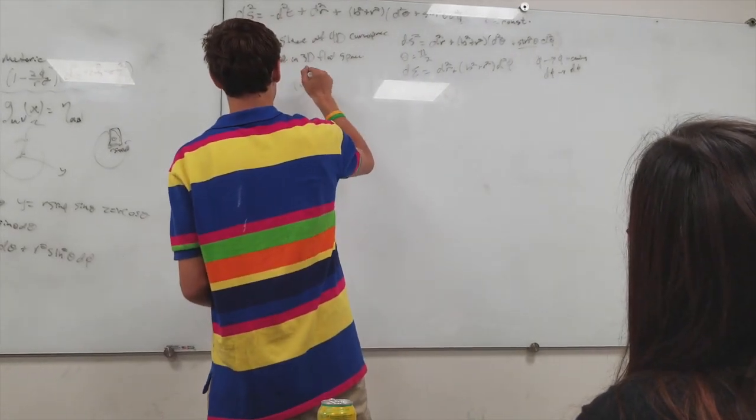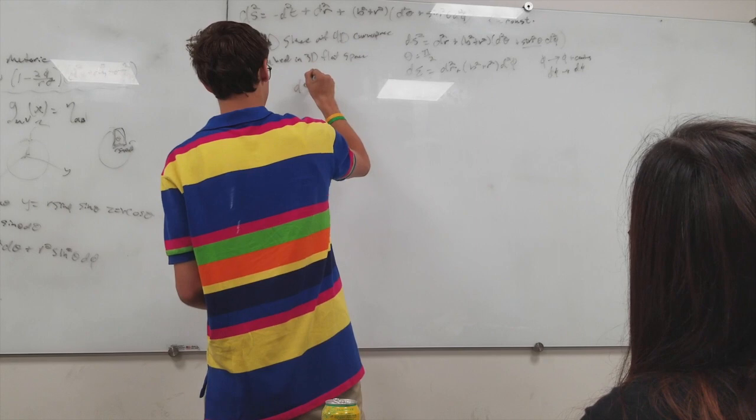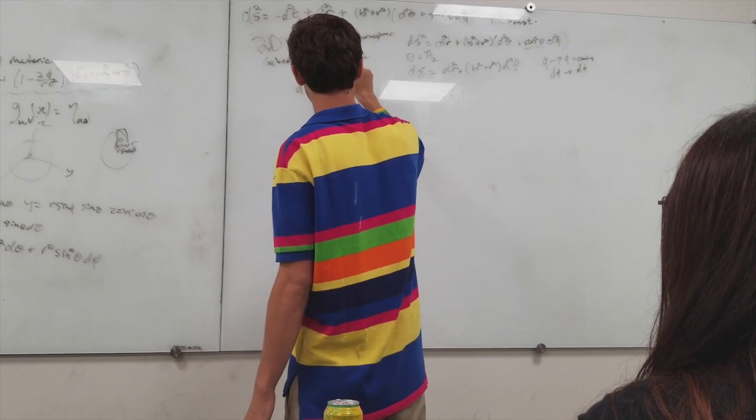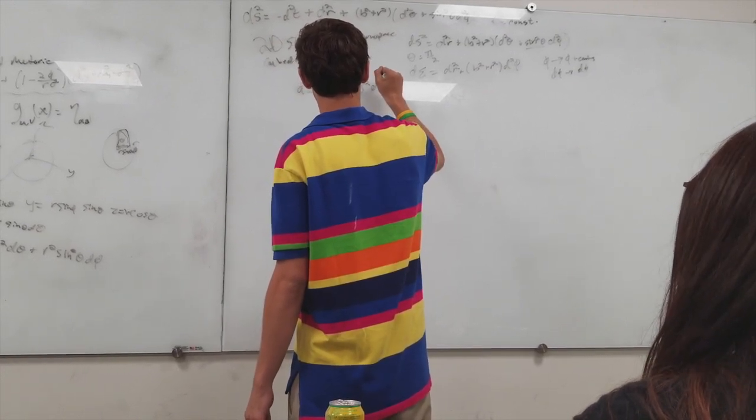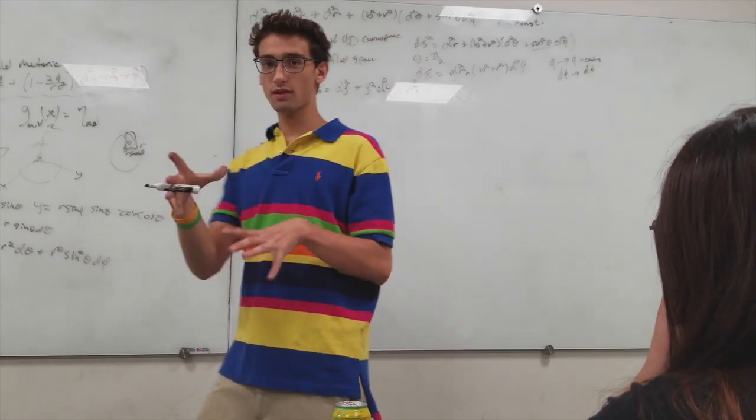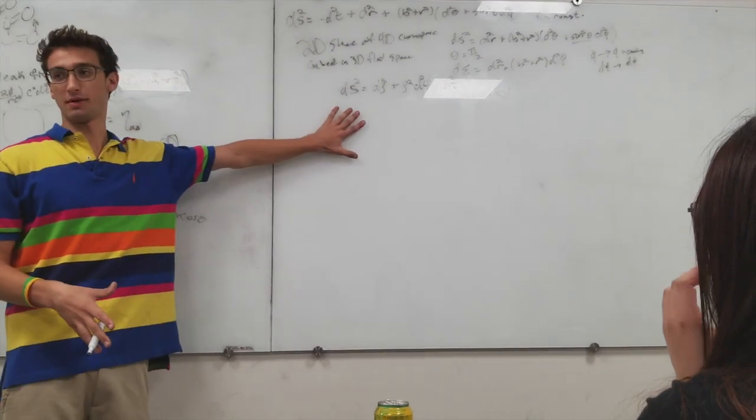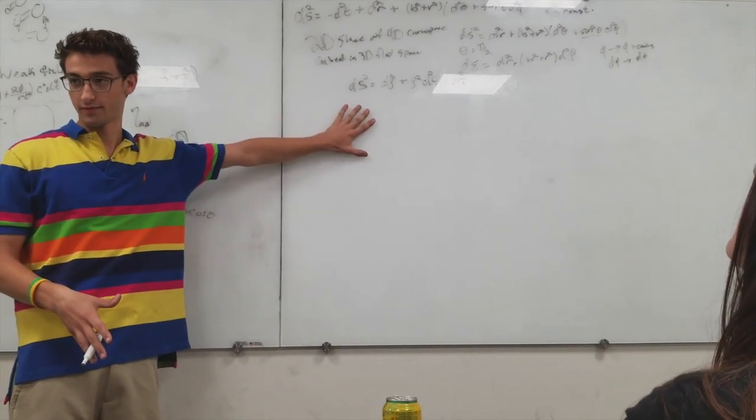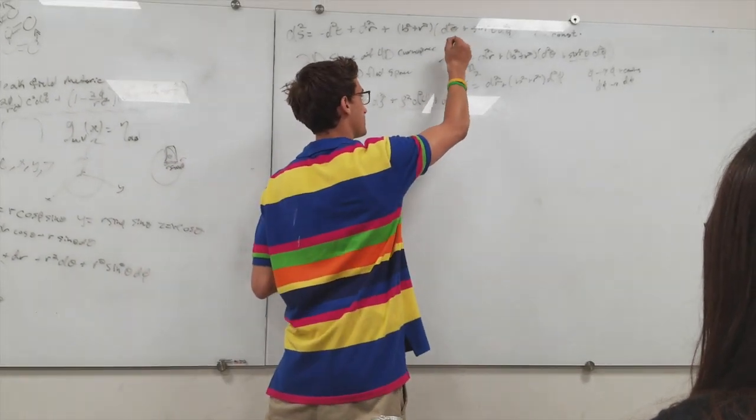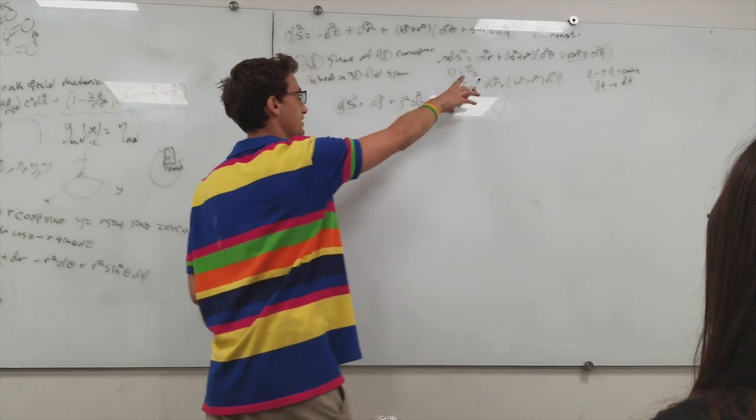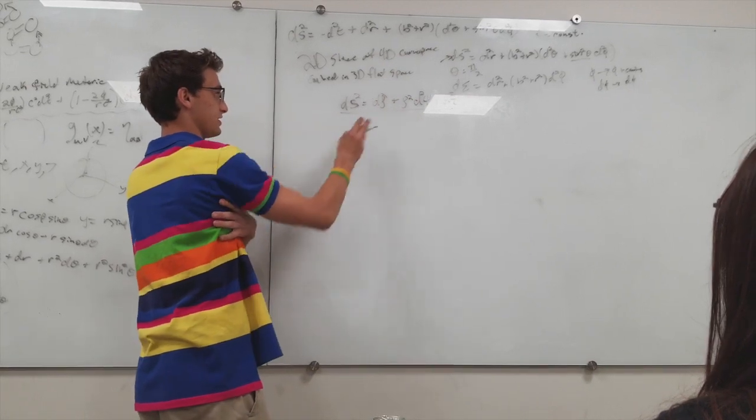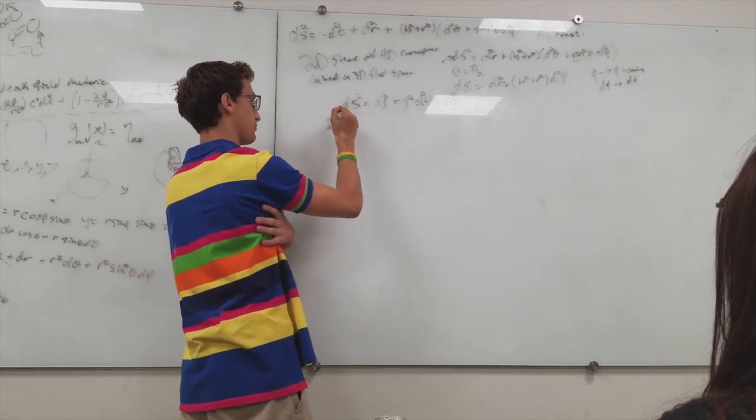So we could look at this ds squared equals d rho squared plus rho squared d phi squared. So this is an angle plus dz squared. This is three dimensions representing cylindrical coordinates. So our goal is now to make this look like this.